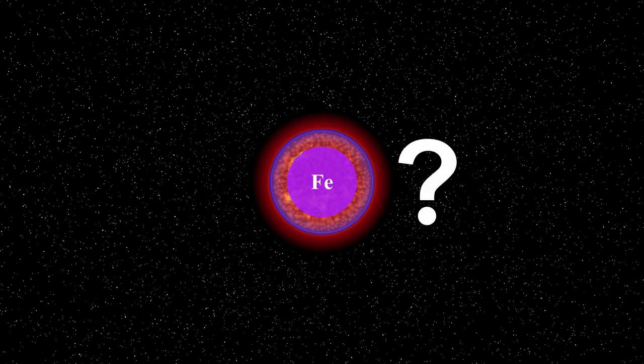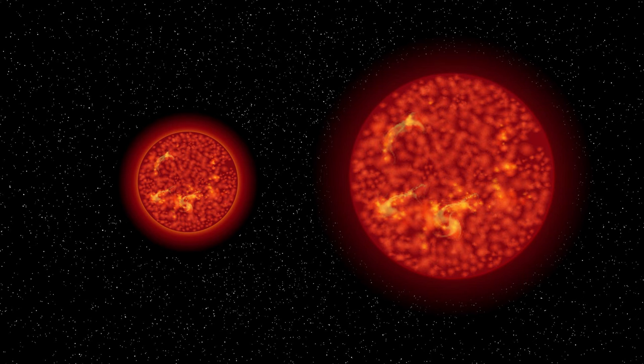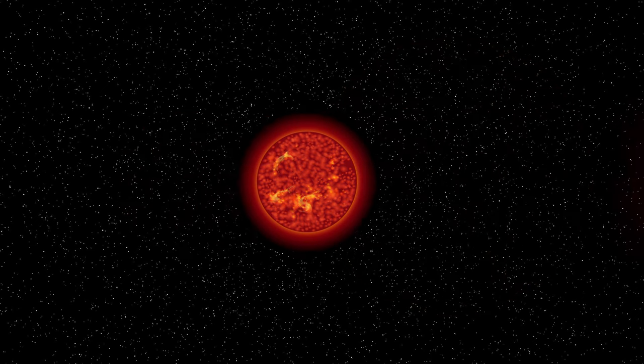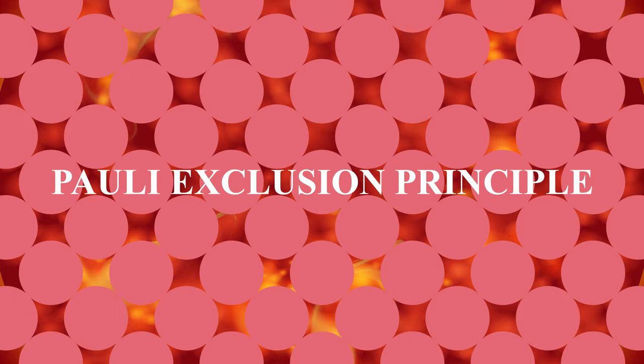What happens next? Now, it depends on the size of the star. For small stars, the gravitational collapse will be stopped by a process called Pauli exclusion principle. Two electrons cannot occupy the same energy state at the same time.